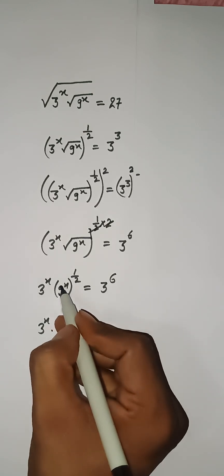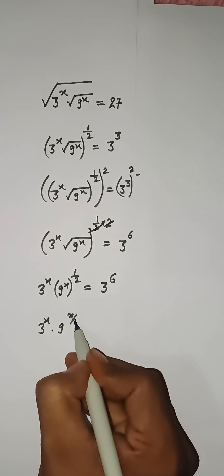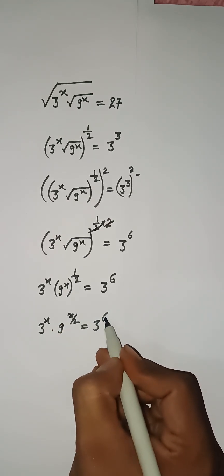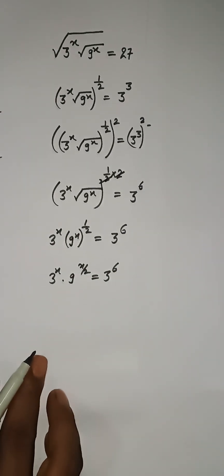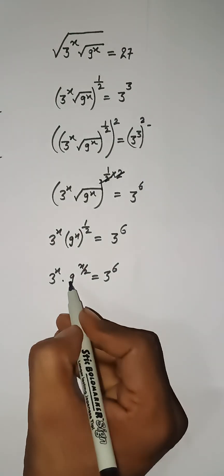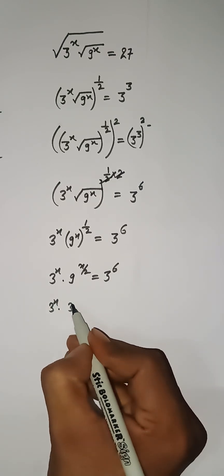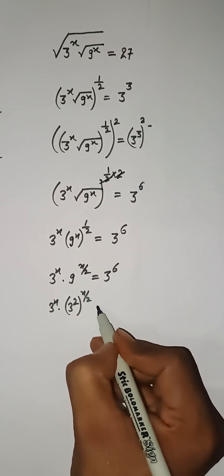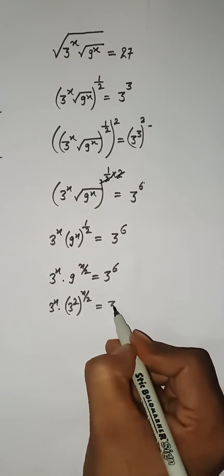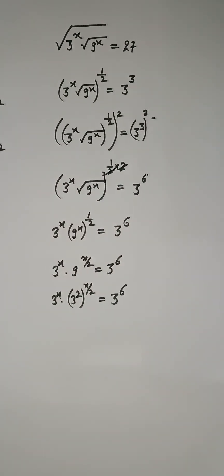Now this can be written as 3 to the power x and we have 9 to the power x by 2, that is equal to 3 to the power 6. Further, this 9 can be written as 3 squared, so here 3 squared with power x by 2, that is equal to 3 to the power 6.